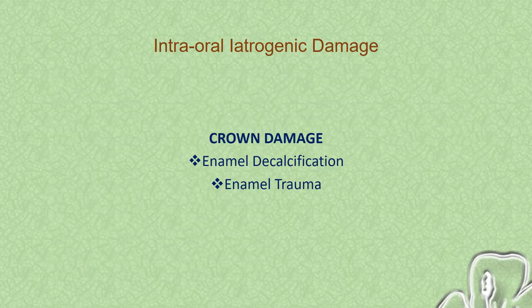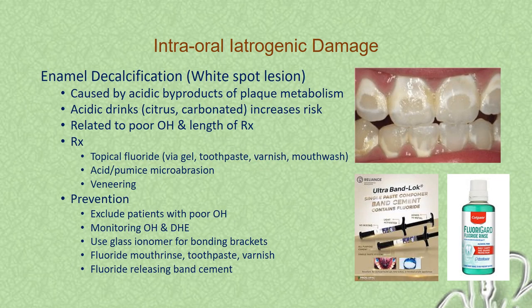Let's have a look at intraoral iatrogenic damage. The first type of crown damage is what we call a white spot lesion or enamel decalcification. This is caused by the acidic byproducts of plaque metabolism and is worsened by the ingestion of acidic or carbonated drinks. This is related to poor oral hygiene and there is also a relationship to the length of treatment — the longer the treatment, the more likelihood there will be enamel decalcification. Treatment of enamel decalcification involves application of topical fluoride.